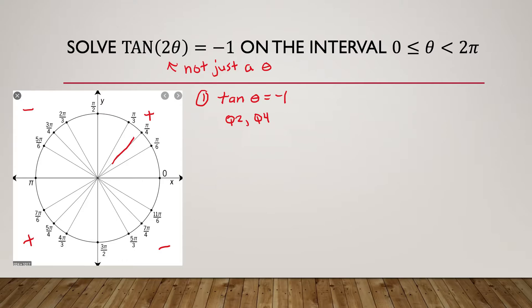Moving into the quadrants I need: in quadrant 2, I'm looking at the diagonal line at 3π over 4. Then in quadrant 4, reflecting that line down, I'm also looking at the diagonal line at 7π over 4. So those are my two base answers for this simplified problem — 3π/4 and 7π/4. That completes the first step of pretending it's just theta and finding those initial answers.